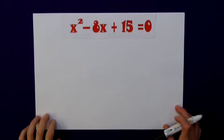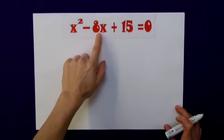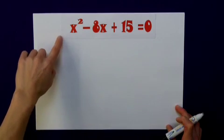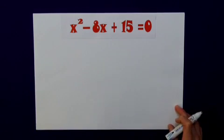Here's one for you to try using the factorization method. x squared minus 8x plus 15 is equal to zero. What are my two values of x going to be for this example? Pause the clip and give it a go.